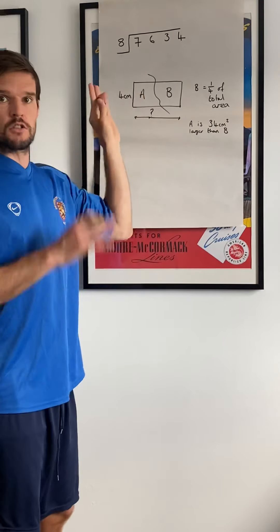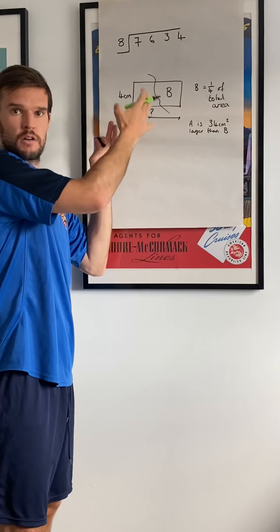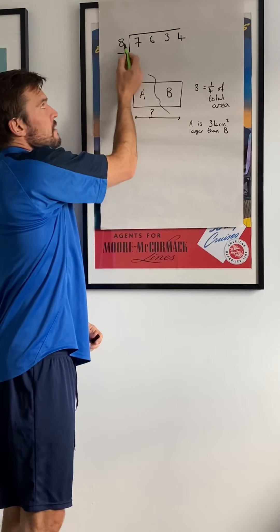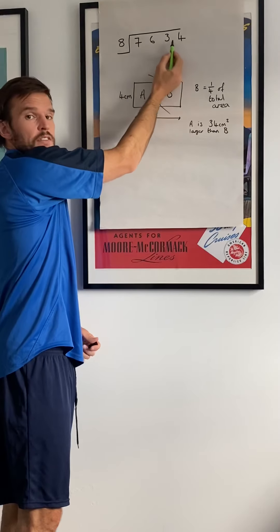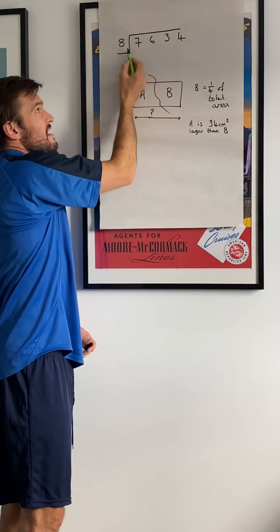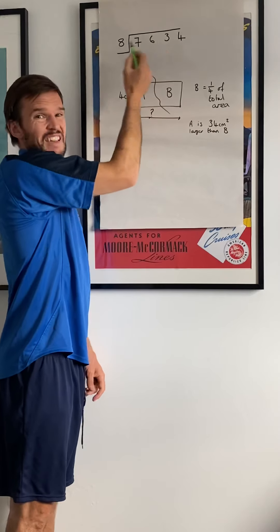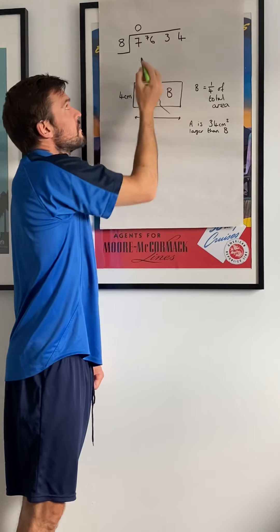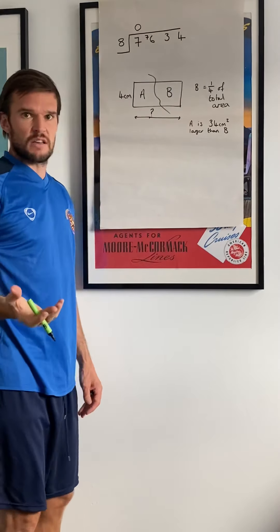First one is division, just to quickly recap the column method. Four digit divided by one digit. What we look at is sharing everything today. Remember this is the thousands, hundreds, tens and units. So we're sharing seven thousand into eight pieces. What we can say is seven into eight doesn't go, so we can put zero, remainder of seven. Now we go eight into seventy-six — that's seventy-six hundredths, that's the value of that column.